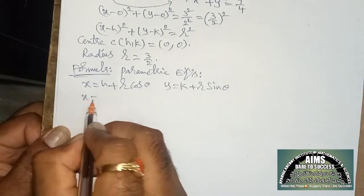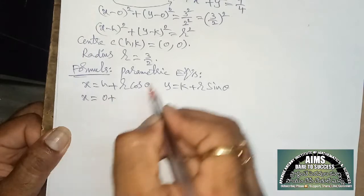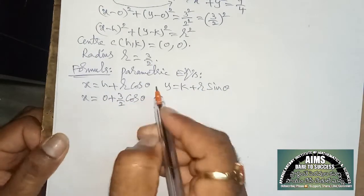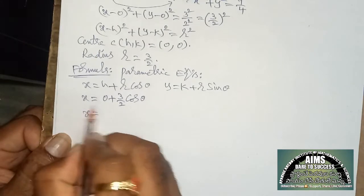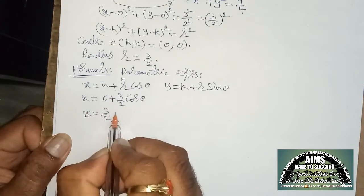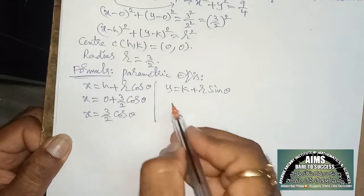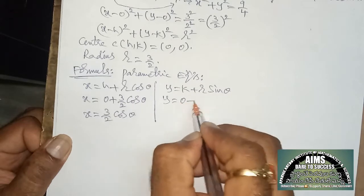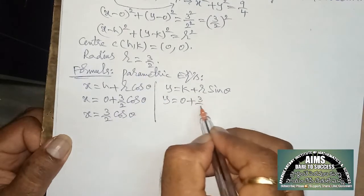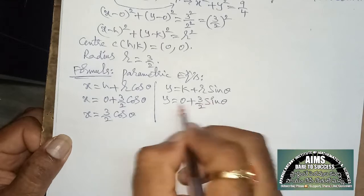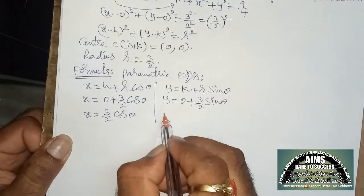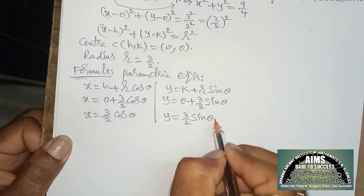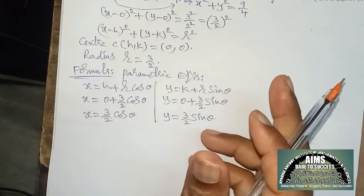Substituting h = 0 and r = 3/2, we get x = 0 + (3/2)·cos θ = (3/2)cos θ. And y = 0 + (3/2)·sin θ = (3/2)sin θ. These are the required parametric equations.